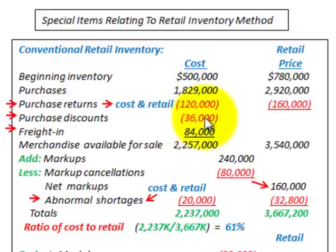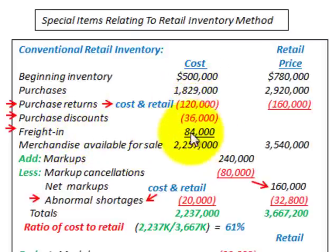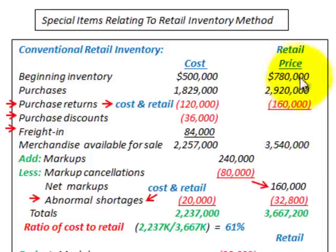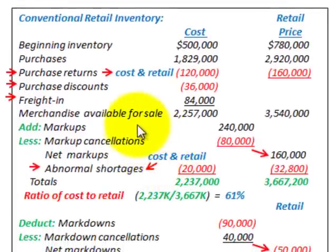Purchase discounts are recorded as a deduction from the cost only — they don't affect retail. Freight in charges also affect the cost only, added to cost. Summing these amounts gives us our total merchandise available for sale, both at cost and at retail price.